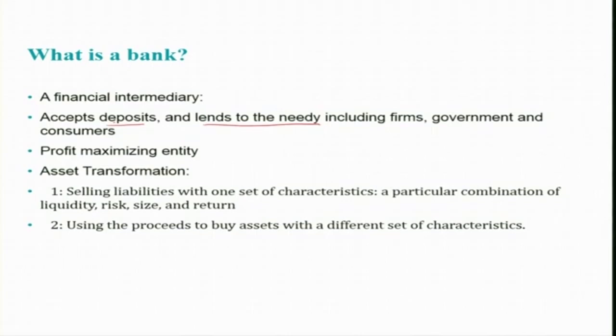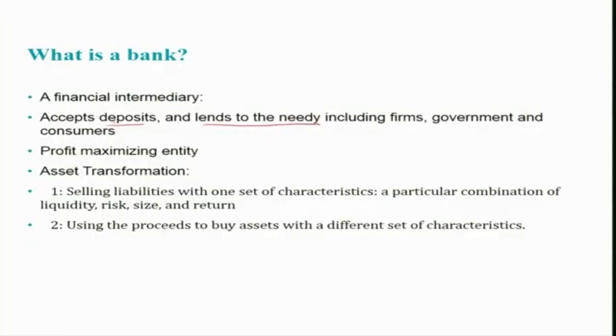While doing that, a bank engages in an important function called asset transformation. Asset transformation is the process of selling liabilities with one set of characteristics — including a particular combination of liquidity, risk, size, and return — and using those proceeds to buy assets with a different set of characteristics. For example, selling liabilities means accepting deposits, such as a savings bank account deposit that almost all of you have with a bank.